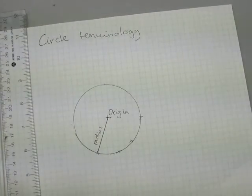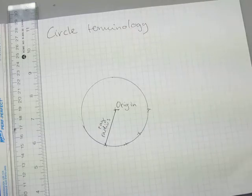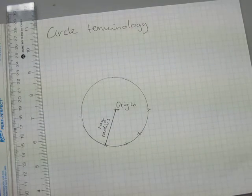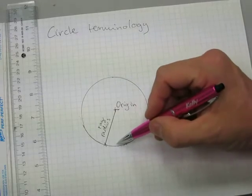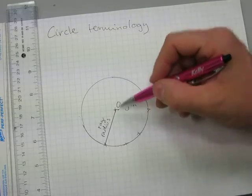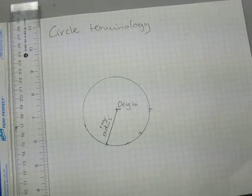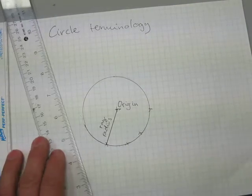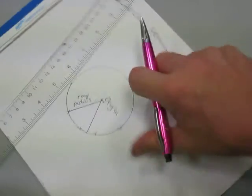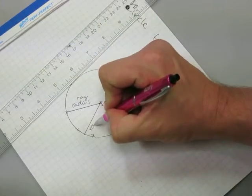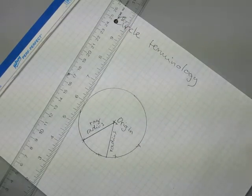A radius here. The word radius just means ray. I could have connected the origin to the edge of the circle here, or here, or here — at any point. There is an infinite number of combinations possible. I'll just do another one here, so now we have two radii. The plural is radii.